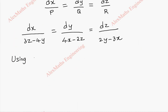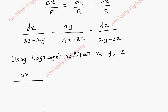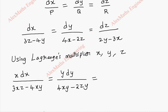Using Lagrange's multiplier as x, y, and z. We multiply the first term with x, giving x dx by (3xz minus 4xy). The second term multiplied with y gives y dy by (4xy minus 2zy). The last term multiplied with z gives z dz by (2yz minus 3xz).